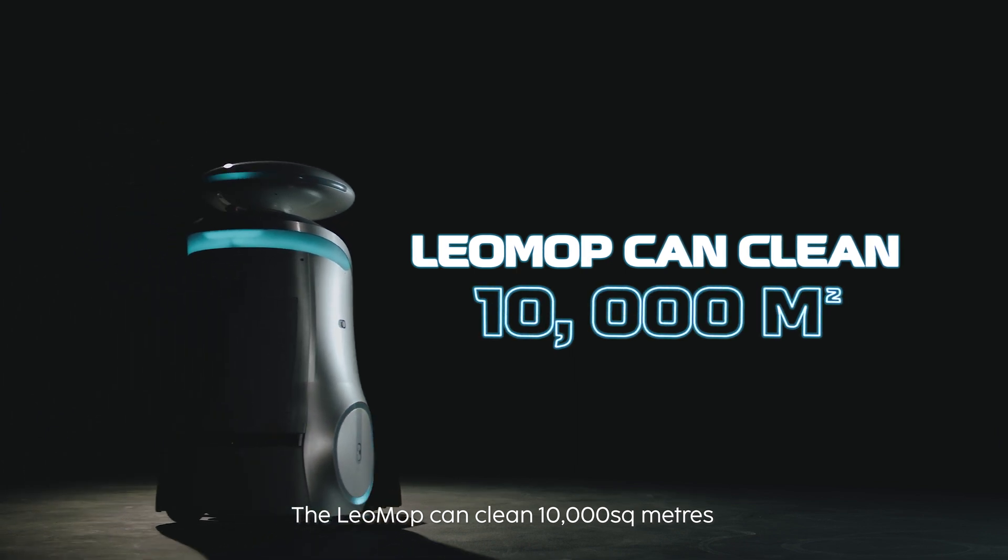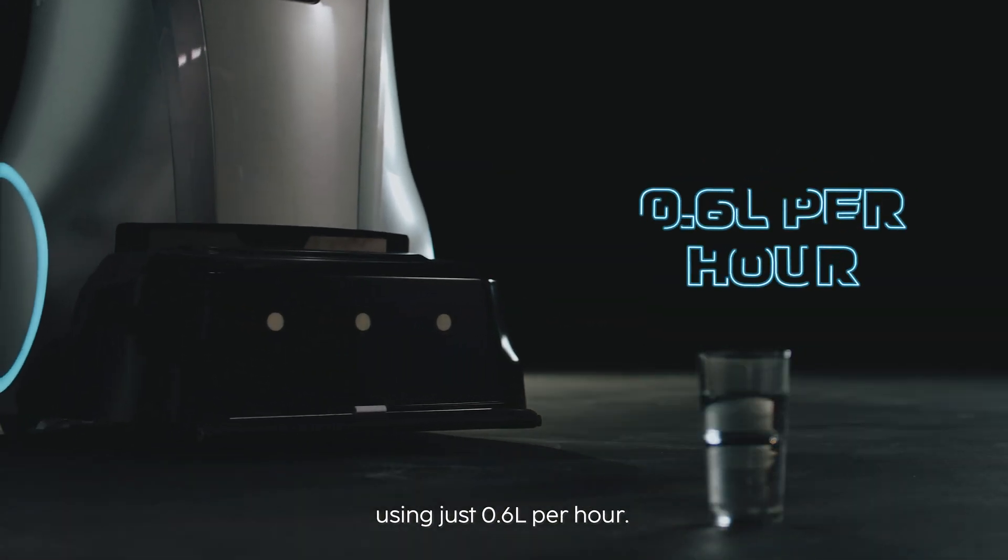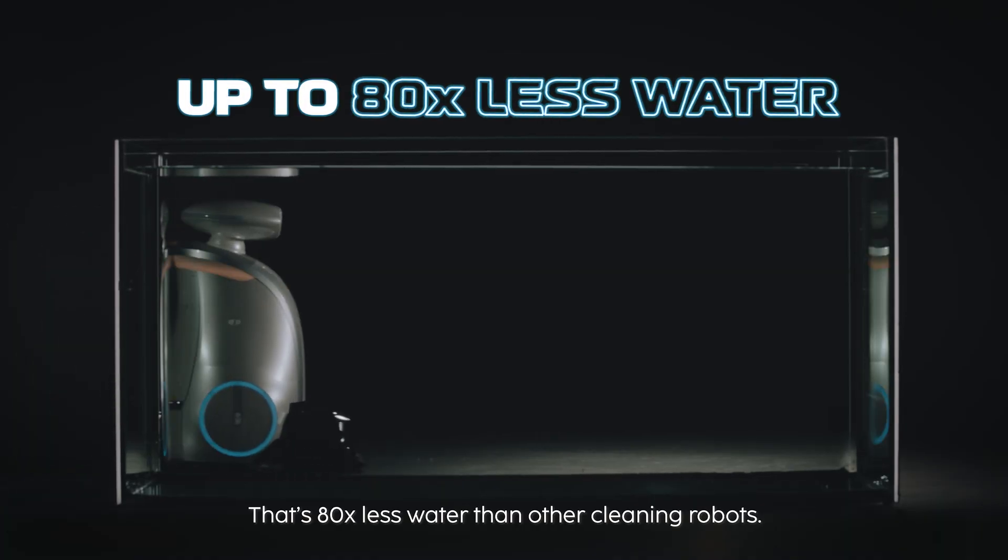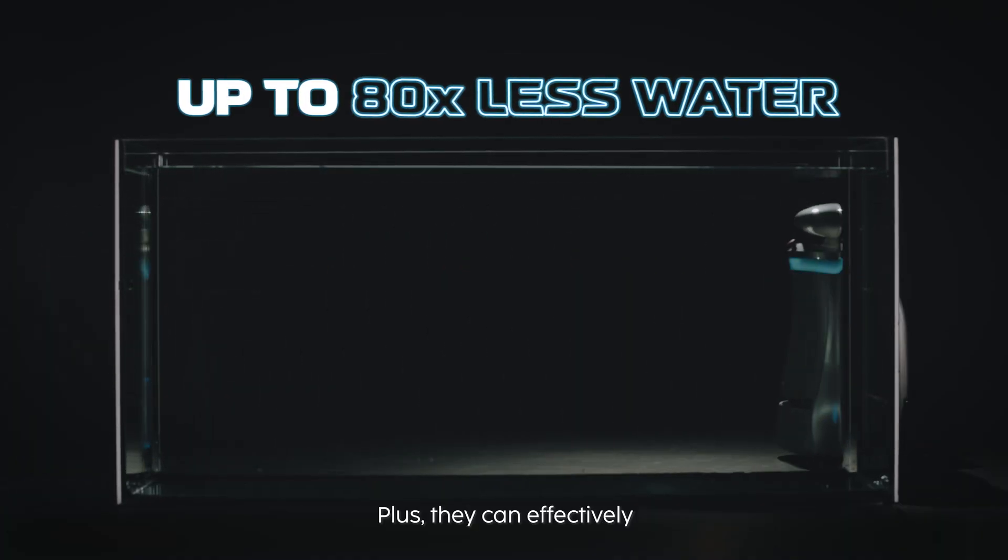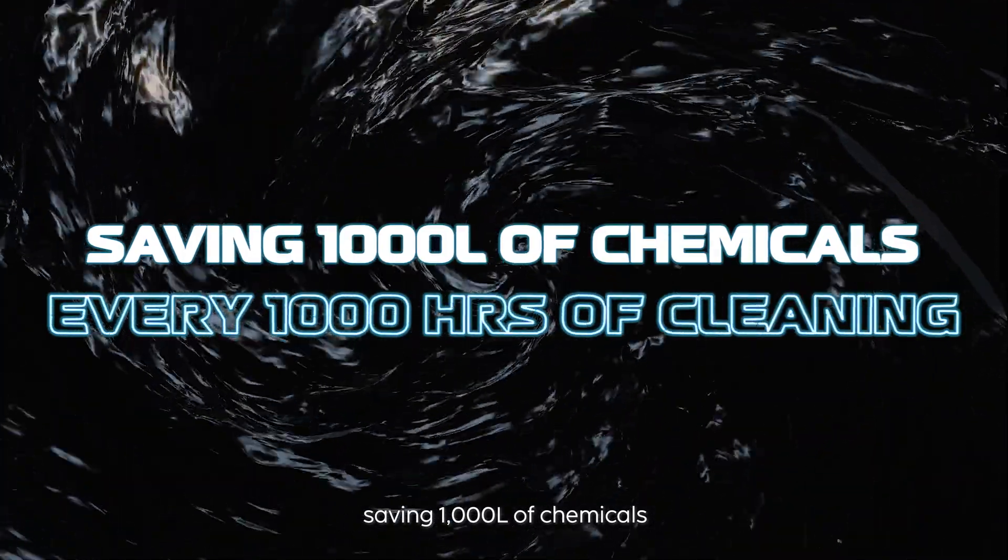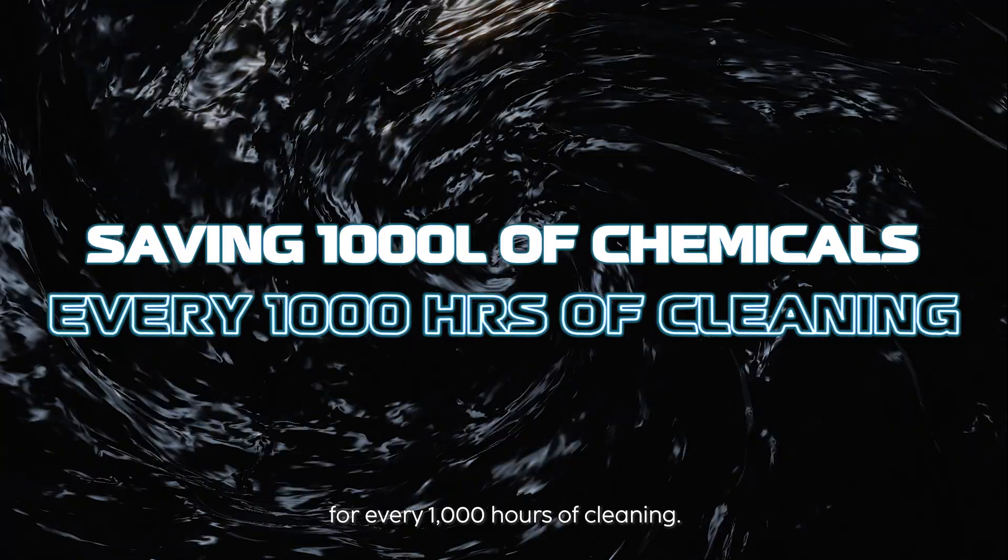The LeoMob can clean 10,000 square meters using just 0.6 liters per hour. That's 80 times less water than other cleaning robots. Plus, they can effectively clean using tap water, saving 1,000 liters of chemicals for every 1,000 hours of cleaning.